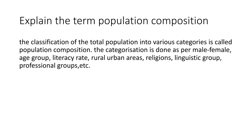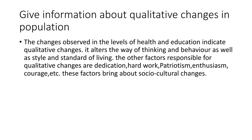Next, explain the term population composition. The classification of the total population into various categories is called population composition. The categorization is done as per male-female ratio, age group, literacy rate, rural-urban areas, religions, linguistic groups, professional groups, and so on.